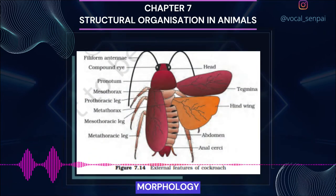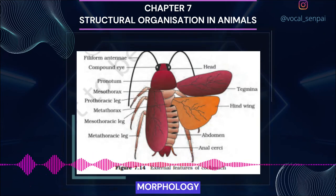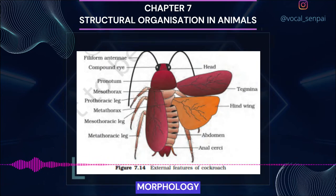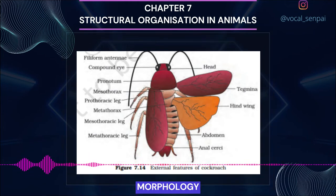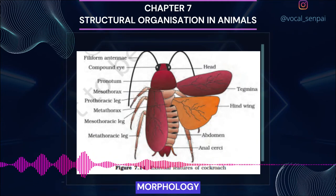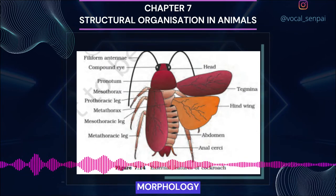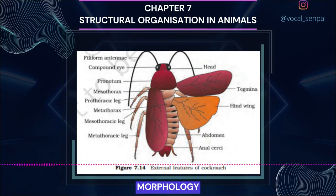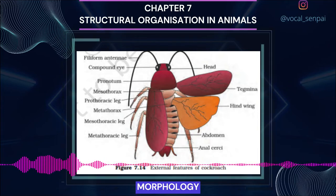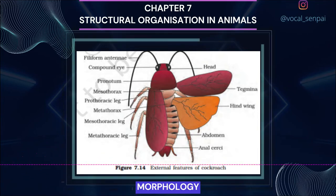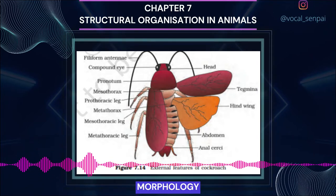Morphology. The adults of the common species, Periplaneta americana, are about 34 to 53 mm long with wings that extend beyond the tip of the abdomen in males. The body is segmented and divisible into three distinct regions: head, thorax and abdomen (figure 7.14). The entire body is covered by a hard chitinous exoskeleton, brown in color. In each segment, the exoskeleton has hardened plates called sclerites — tergites dorsally and sternites ventrally — joined by a thin flexible articular membrane (arthrodial membrane). The head is triangular in shape, lying anteriorly at right angles to the longitudinal body axis, formed by fusion of six segments, and shows great mobility in all directions due to the flexible neck (figure 7.15).